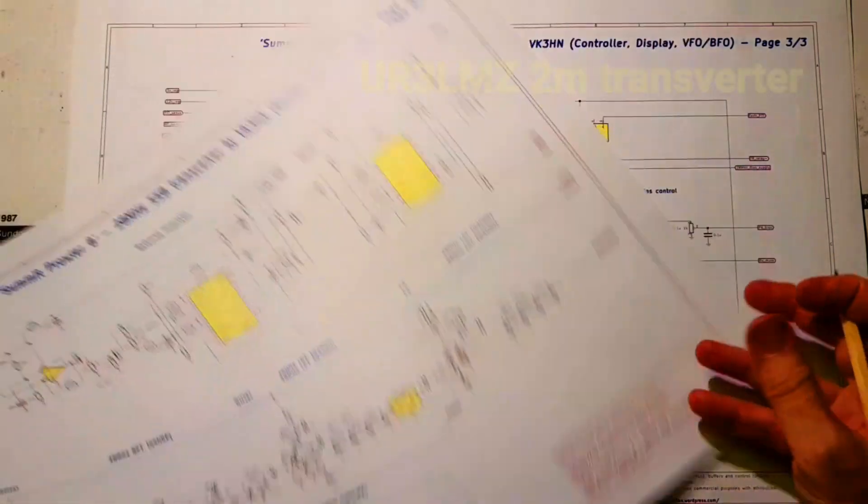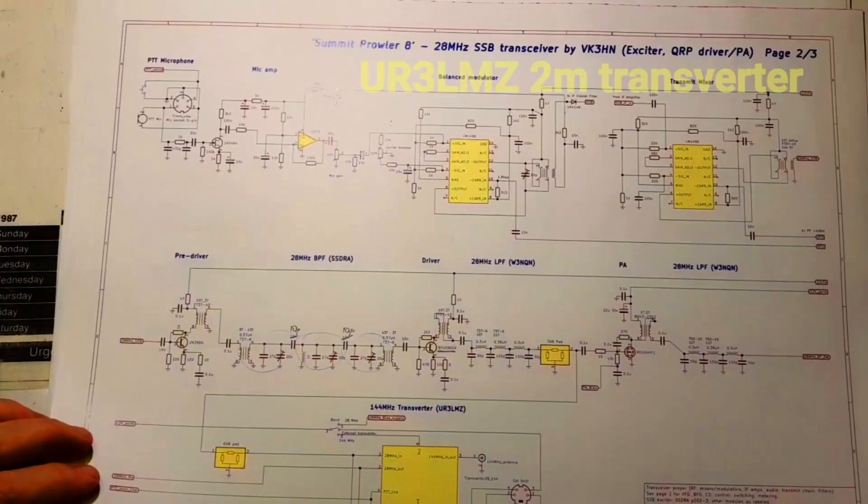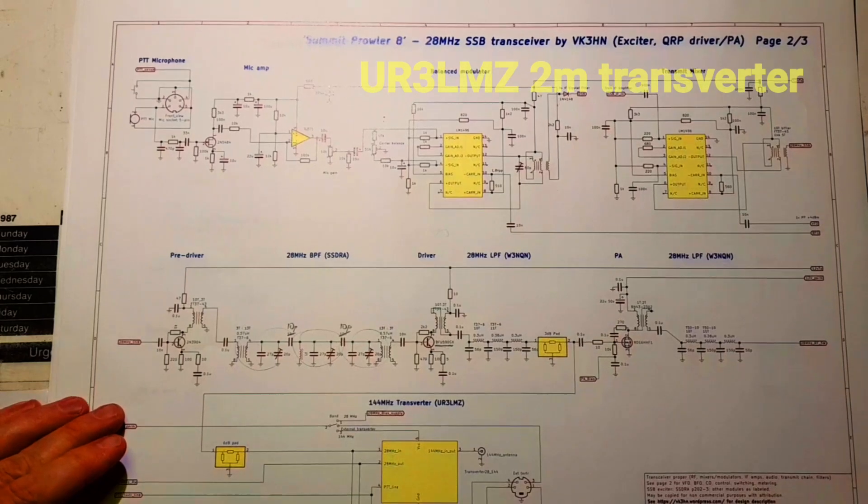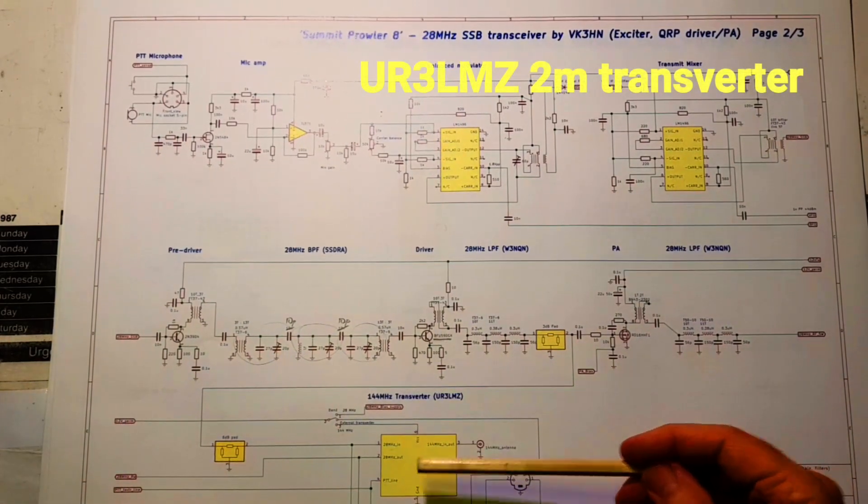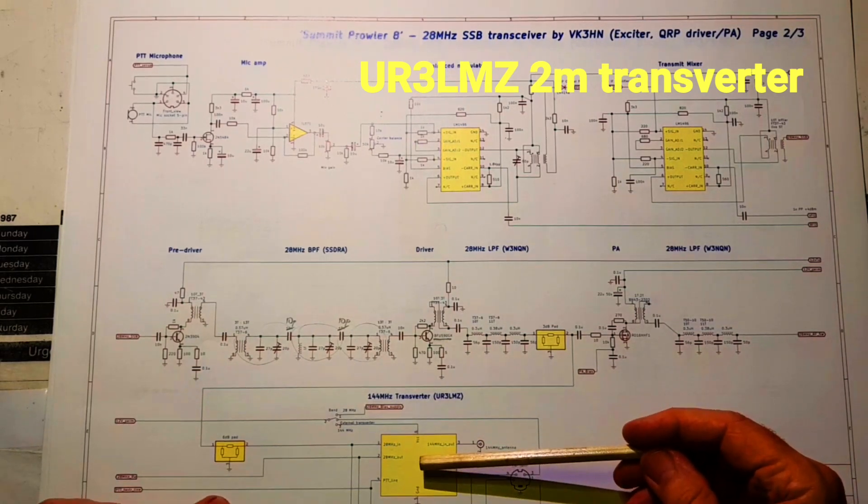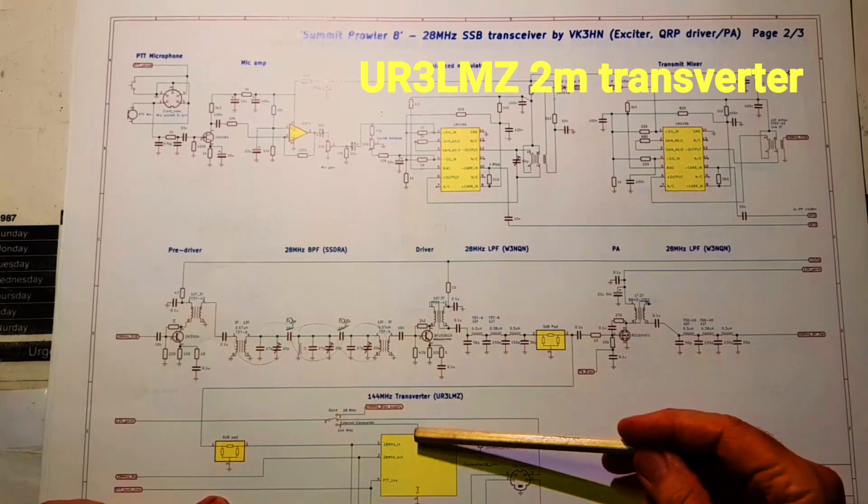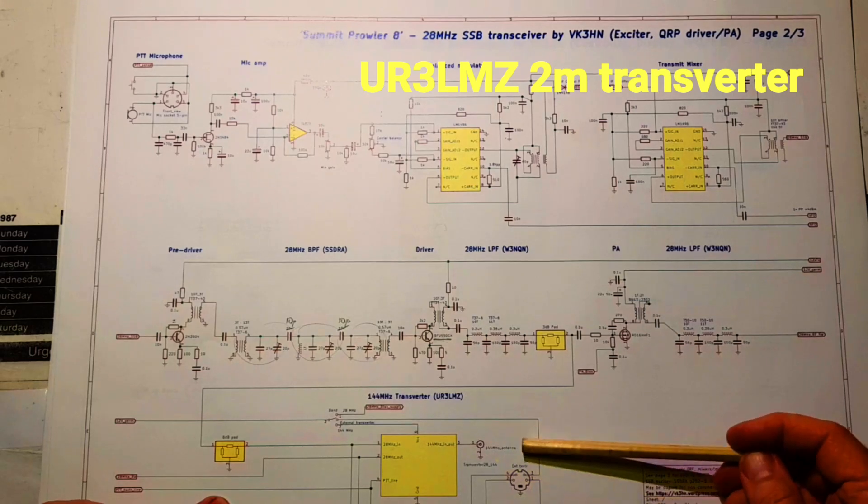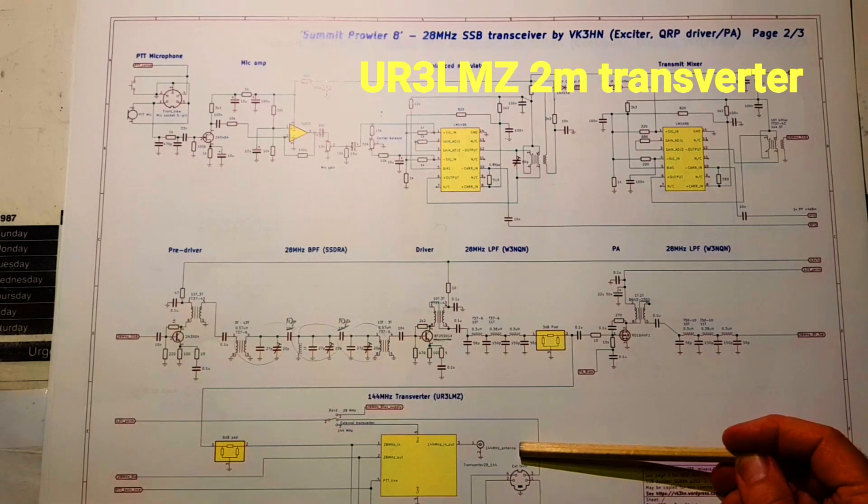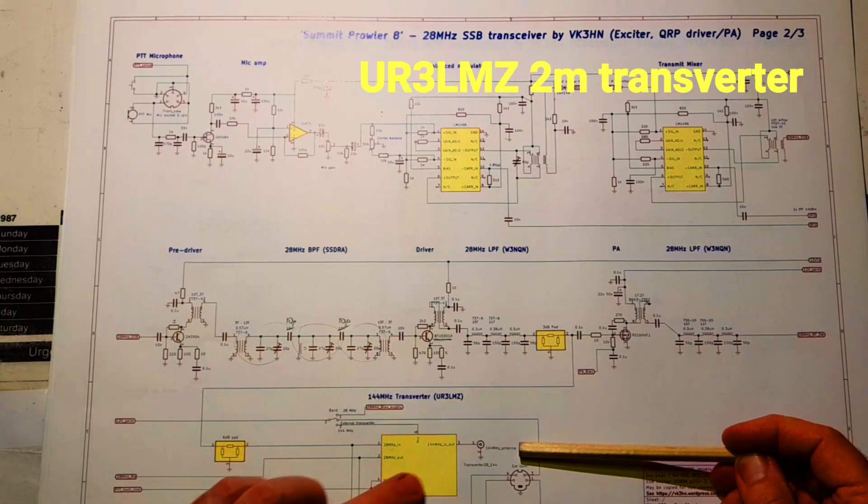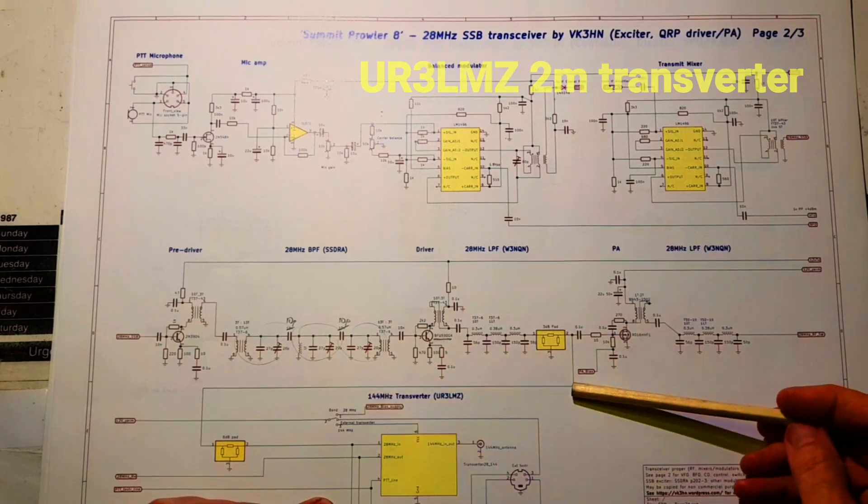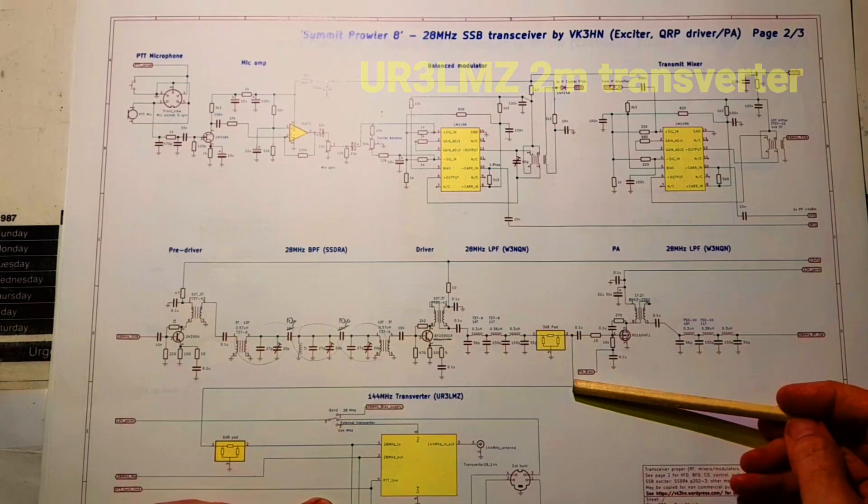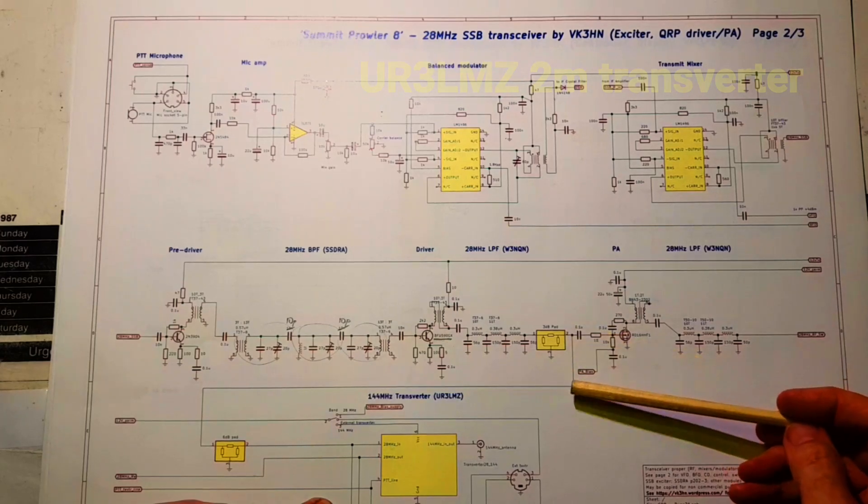So then, the last thing to cover is the 2-metre transverter and how that fits. The transverter just sits down here. It's pretty much self-contained. And there is DC switching to apply power. It has its own 2-metre antenna socket, so that's all neat and clean. It needs a PTT line to flip it between received and transmit. I guess the most significant thing about it is that we can power the transmit part of the transverter from the driver.